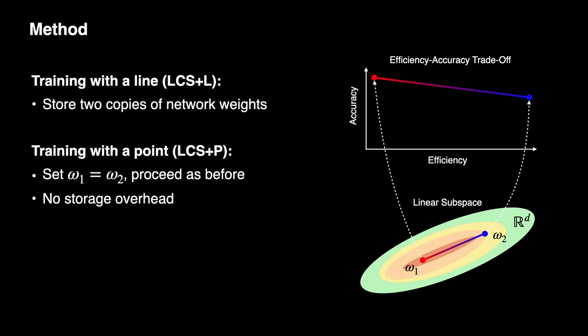We call this method of training a linear subspace LCS+L. To deploy this model on a device, we need to store the two endpoints, which may be undesirable due to the additional storage overhead. To circumvent this, we also considered a degenerate subspace that consists of only a single point, which we call LCS+P. In this setting, our training procedure conditions a single model to tolerate different compression levels.